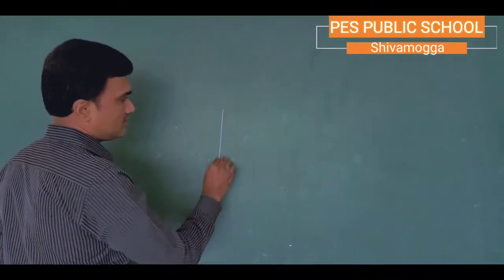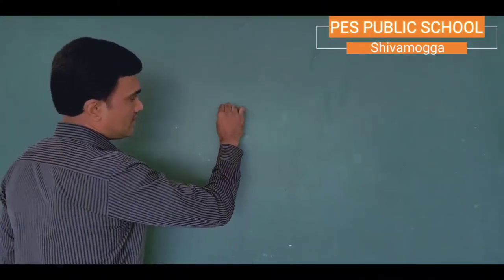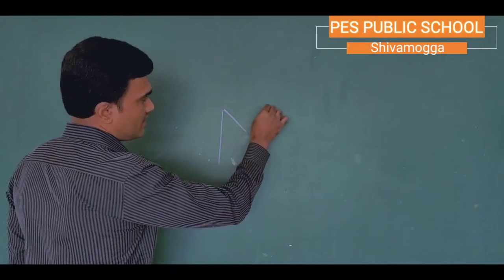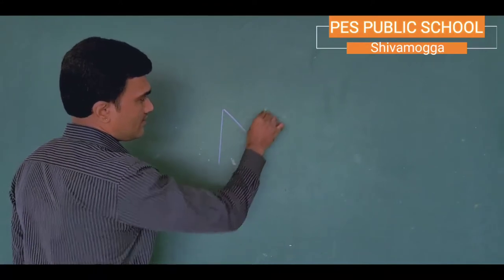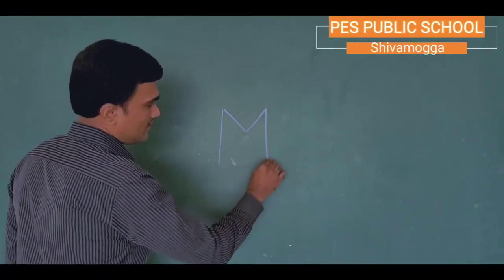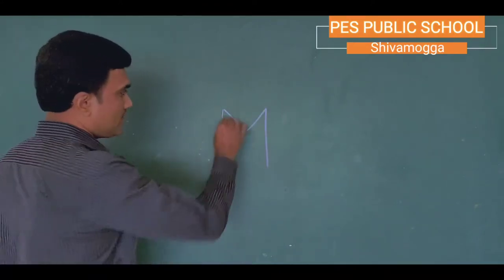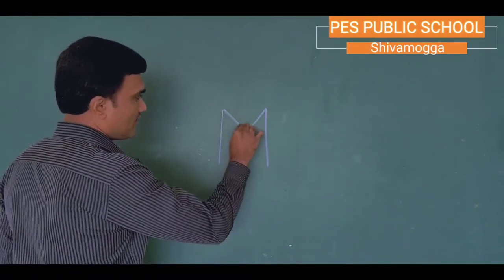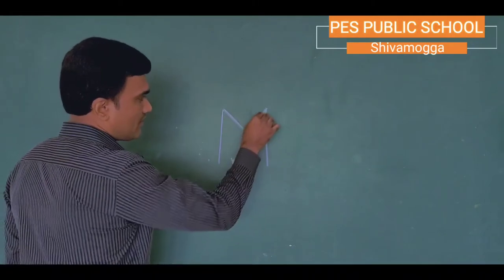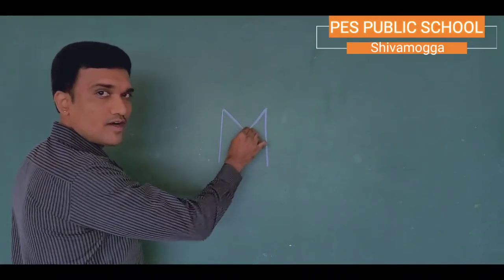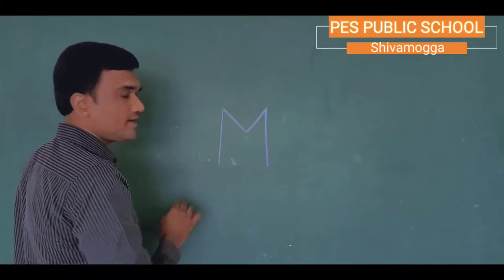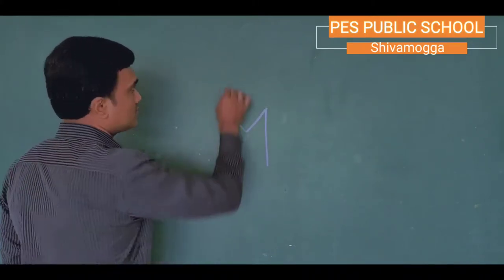Children, this is capital M. From M, I am showing you how to draw a mouse.